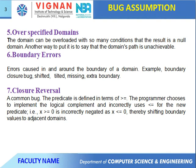Next, boundary errors: errors that occur in and around the boundaries of a domain. Examples include: boundary closure path, left-shifted or right-shifted, tilted, and missing or extra boundaries. These are the boundary error types: one is a closure path, next is shifted — left-shifted or right-shifted — next is tilted, next is missing value, and next is extra boundaries.